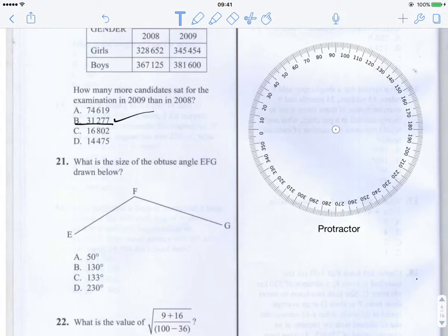This is question number 21 from the 2013 KCP Maths paper. It says what is the size of the obtuse angle EFG? So drawn below, we're looking for the angle EFG, this angle here.